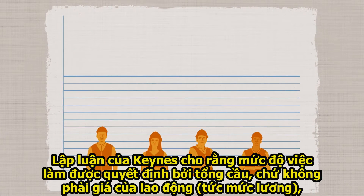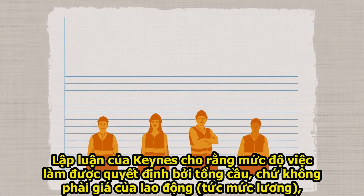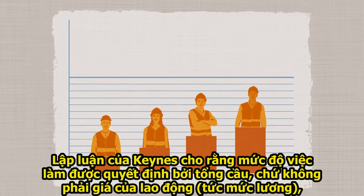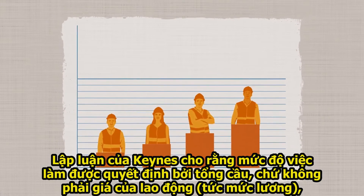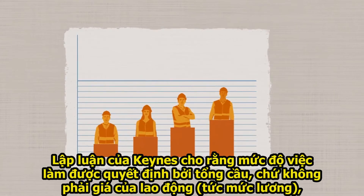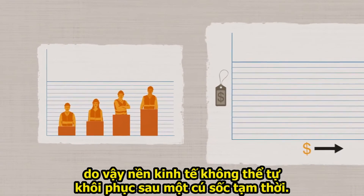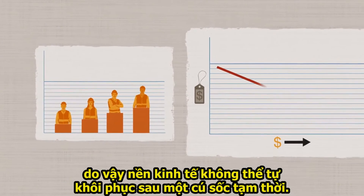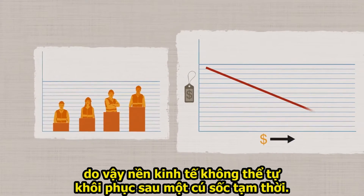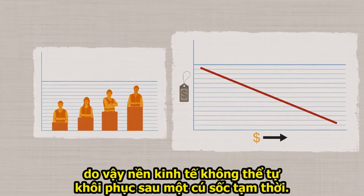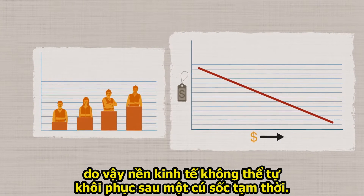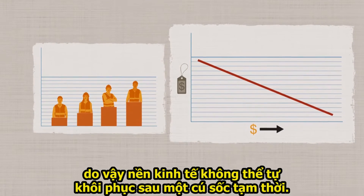Keynes' argument was that employment levels were determined by aggregate demand rather than the price of labor, so economies could not be expected to automatically restore themselves after a temporary shock.